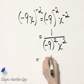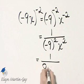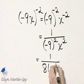And then what do we have in this denominator? This is negative 9 times negative 9, which is positive 81 x squared.